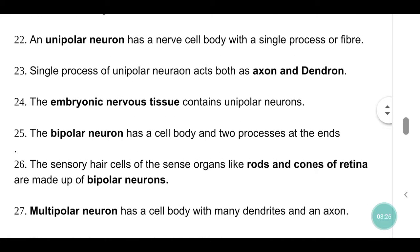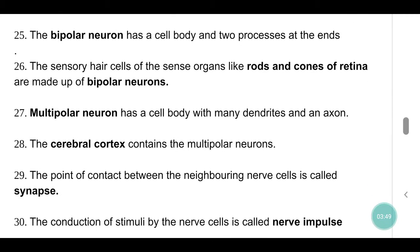A unipolar neuron has a nerve cell body with a single process or fiber. The single process of a unipolar neuron acts both as axon and dendron. The embryonic nervous tissue contains unipolar neurons. A bipolar neuron has a cell body with two processes at the ends. The sensory hair cells of sense organs like rods and cones of the retina are examples of bipolar neurons.